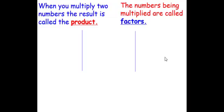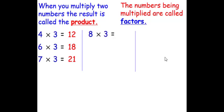When you multiply two numbers, the result is called the product. The numbers being multiplied are called factors. So when we take a look at this one, 4 times 3 is 12, 6 times 3 is 18, and so on.